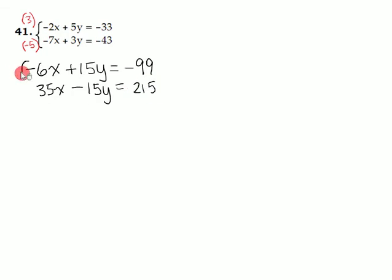Now let's add those two equations together. Well, negative 6 plus 35 is 29, so we'll get a 29x here.